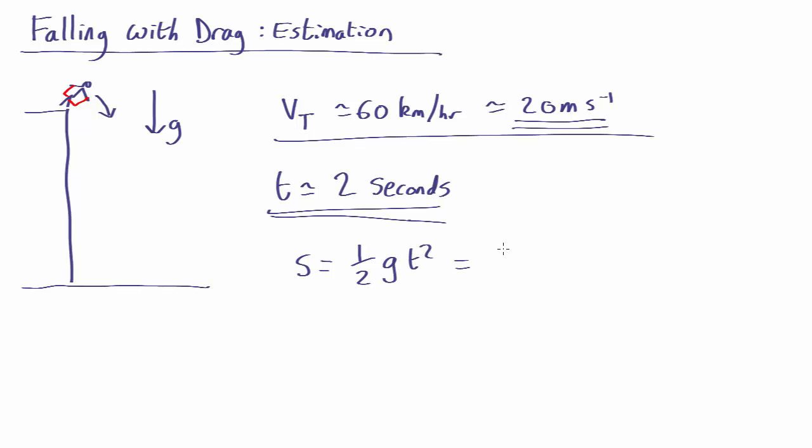Which is 1/2 times 10, just an approximation, times 2 squared, which is about 20 meters. So that's 20 meters. How tall is a skyscraper? Well, each story must be at least two meters, otherwise tall people would bump their heads all the time, probably more like three meters.